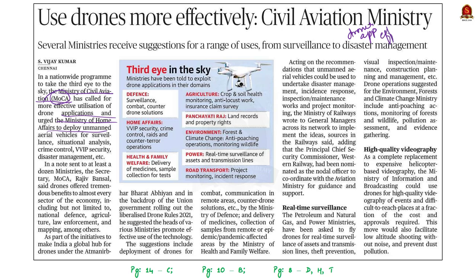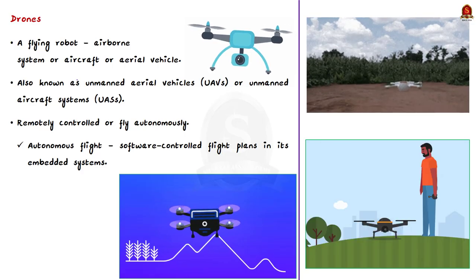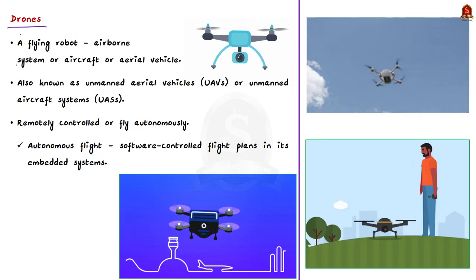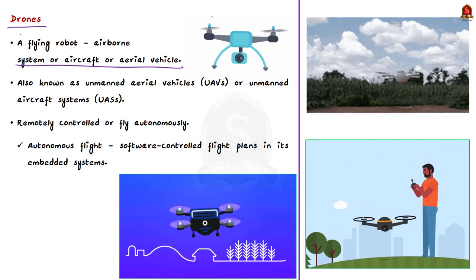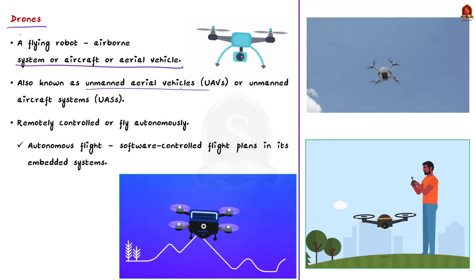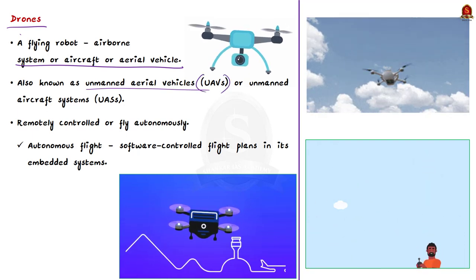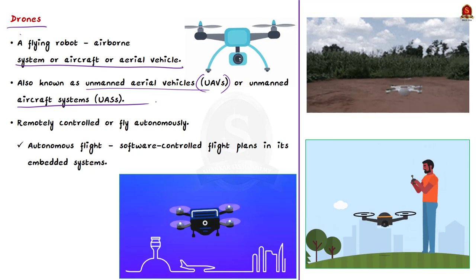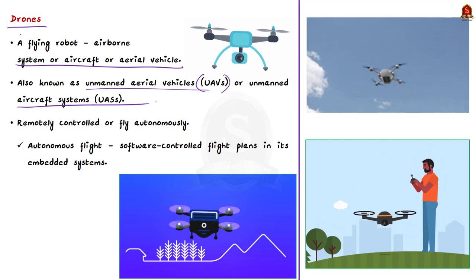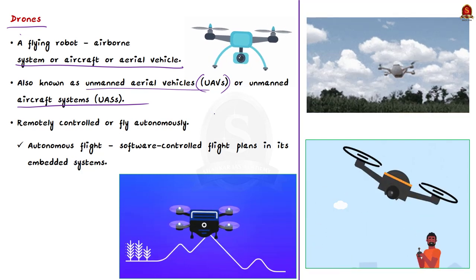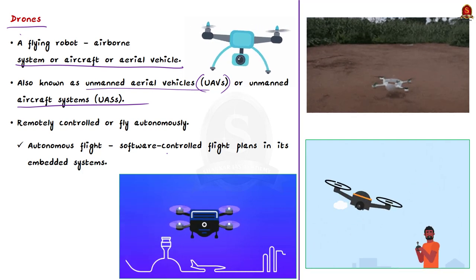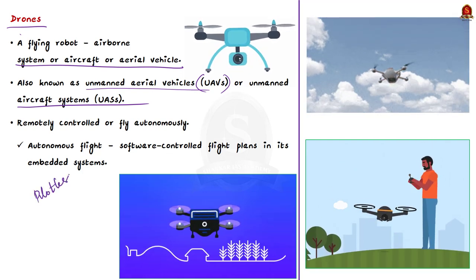A drone is a flying robot — an airborne system or aerial vehicle, formerly known as Unmanned Aerial Vehicle (UAV) or Unmanned Aircraft System (UAS). They can be remotely controlled or fly autonomously through software-controlled flight plans in their embedded systems. Simply put, it is a pilotless aircraft.